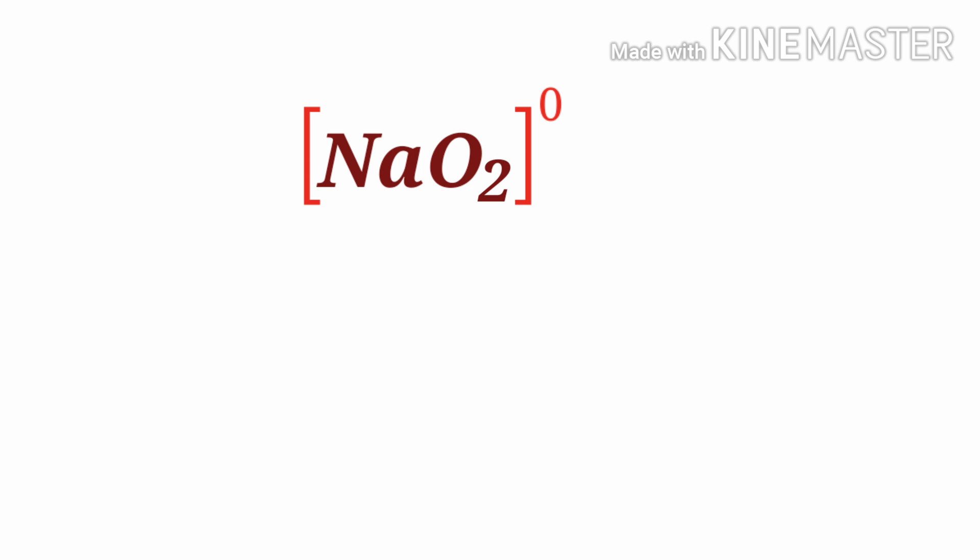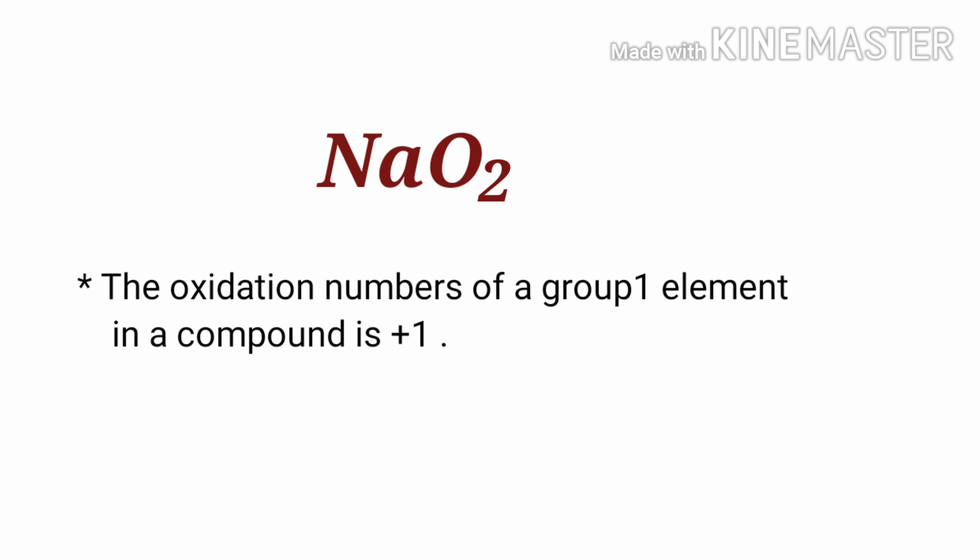Therefore, we know that the sum of the oxidation number of the atoms is equal to zero. By the rules of assigning oxidation numbers, the oxidation number of a group 1 element in a compound is plus 1.